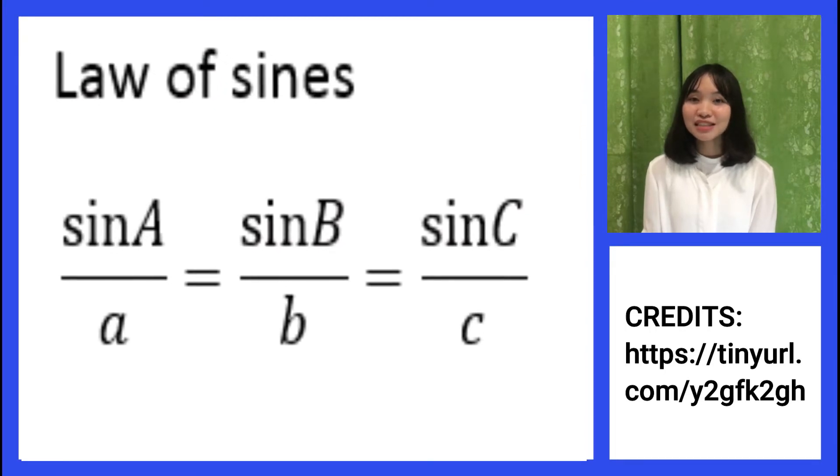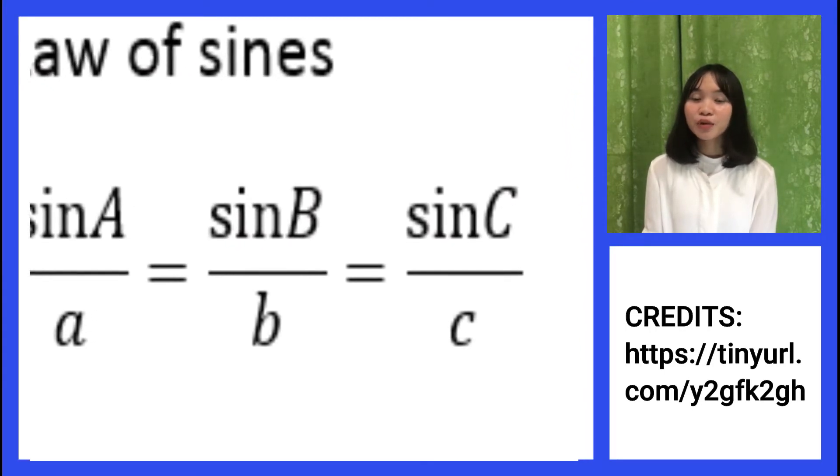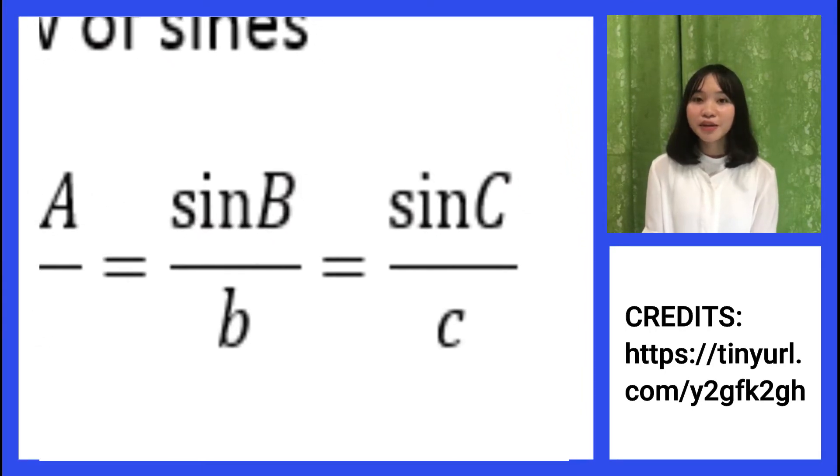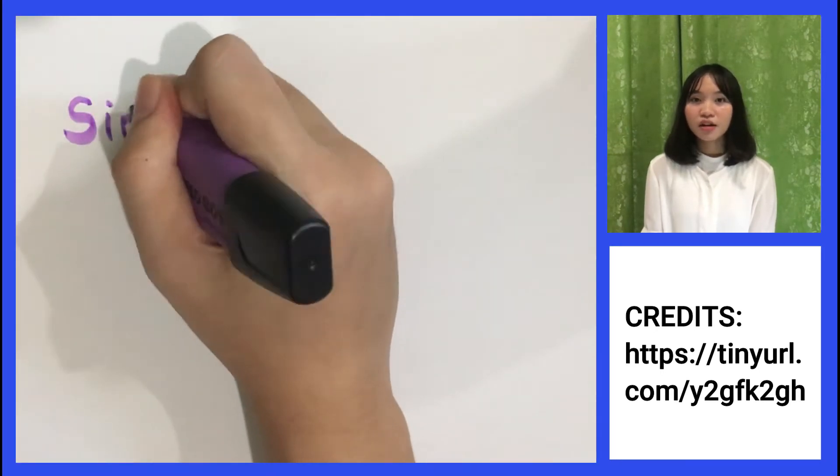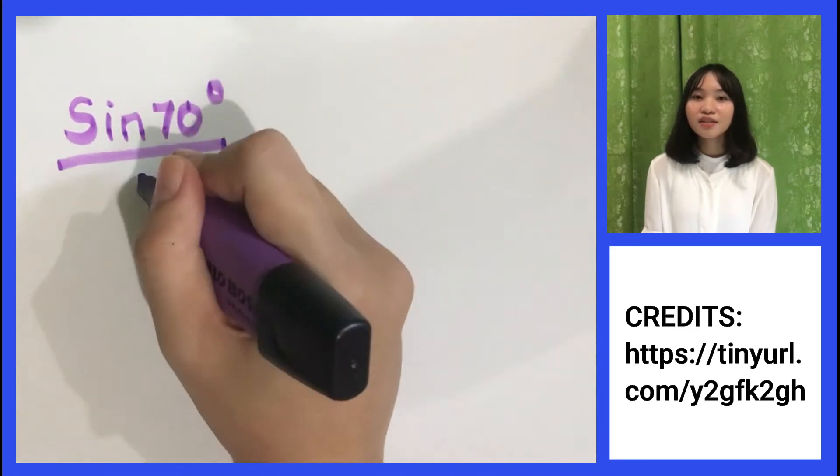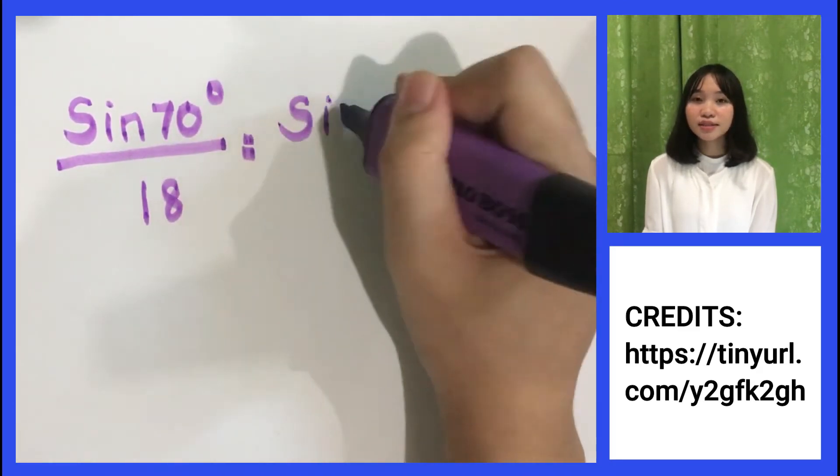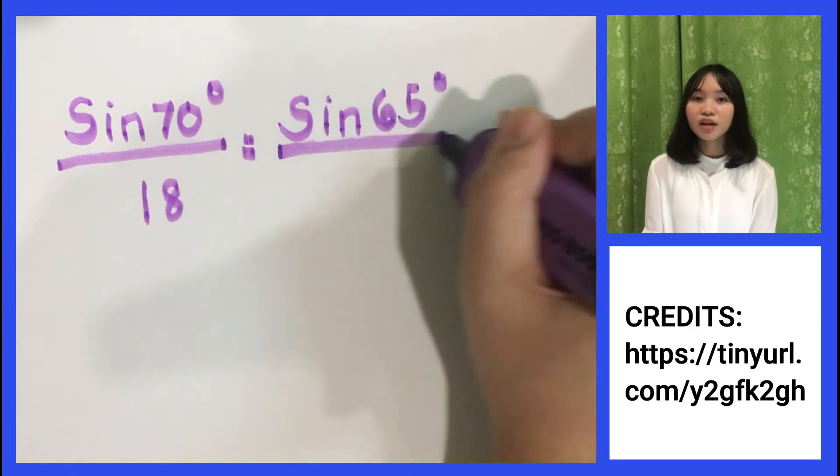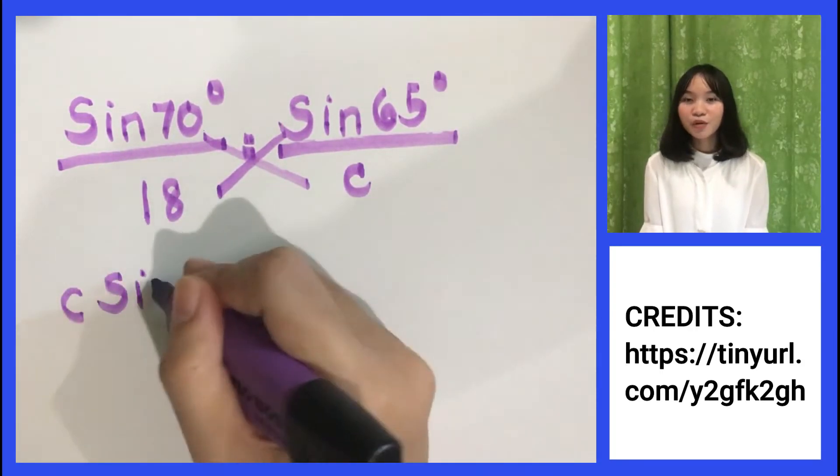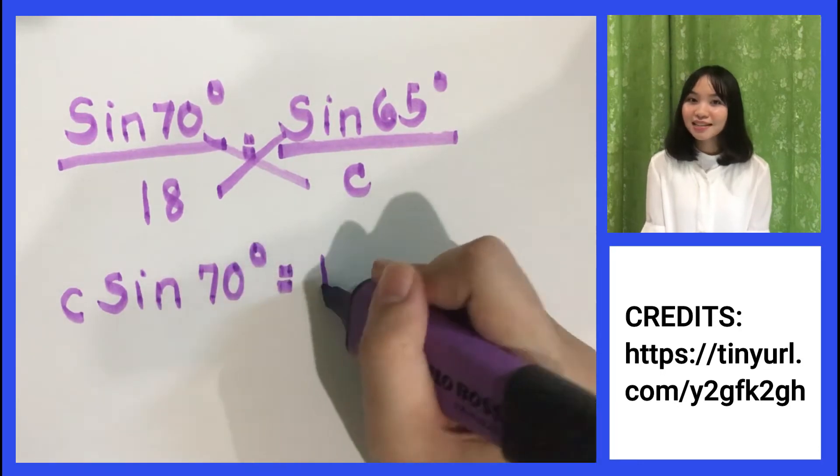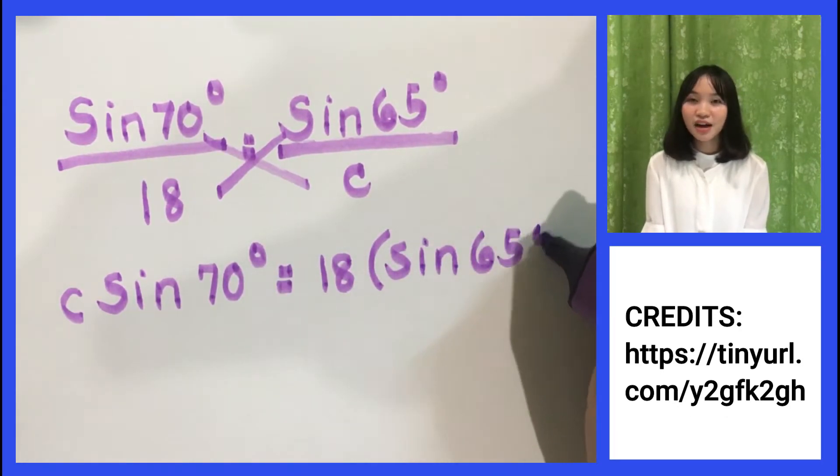The next step is to solve for C using the law of sines. We will use the formula sin B over b equals sin C over c. And if we plug in the given, we will have sin 70 degrees over 18 equals sin 65 degrees over C.